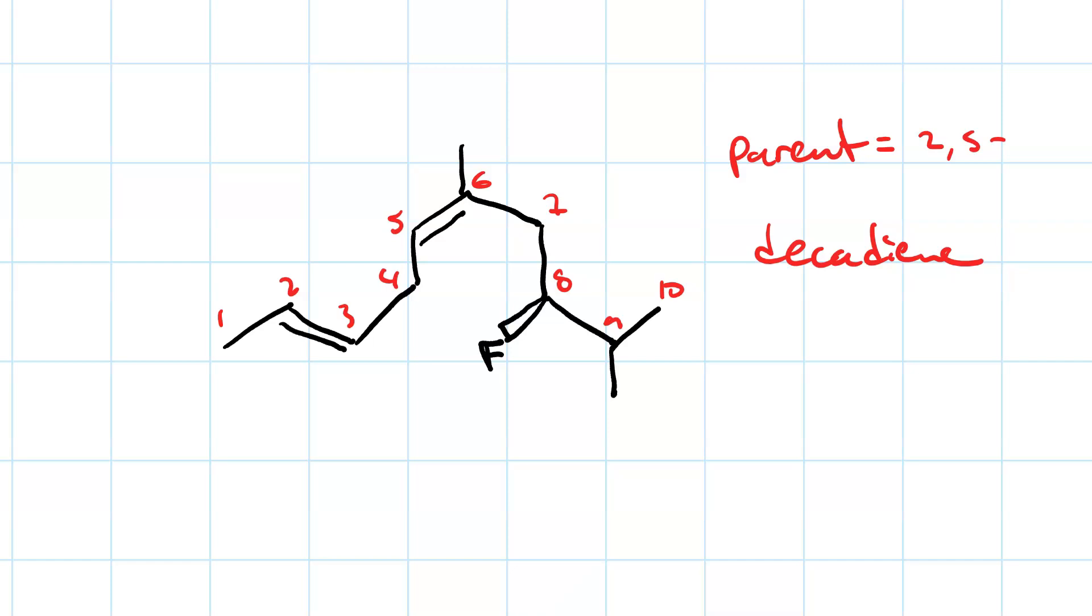Now, as far as substituents go, we have two methyl groups. So 6,9-dimethyl. And then 8-fluoro.